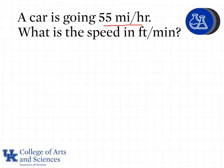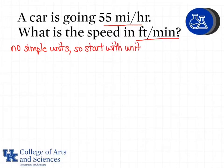The only number that's given in the problem is the 55 miles per hour. Since that's the only number we have we know that's where we're going to start and we're going to finish with feet per minute. There are no simple units so we're going to start with the only value we have that's got a number associated with it.